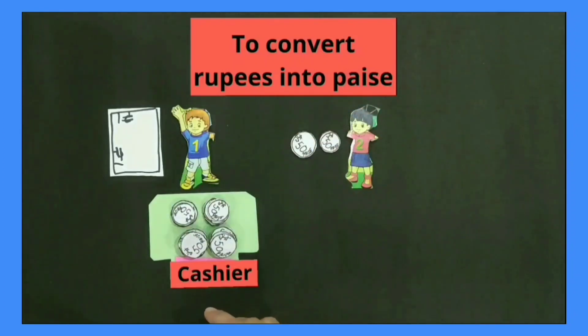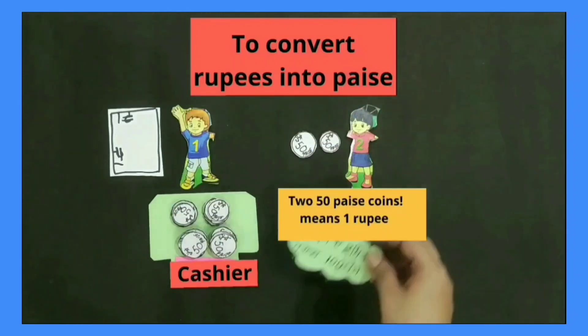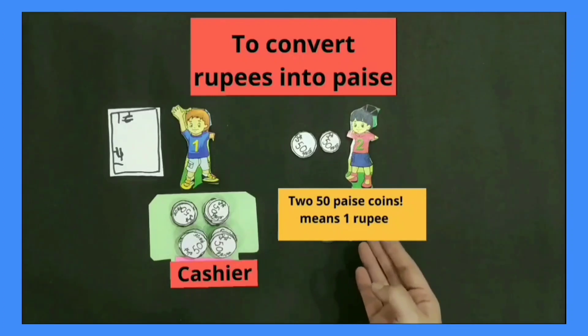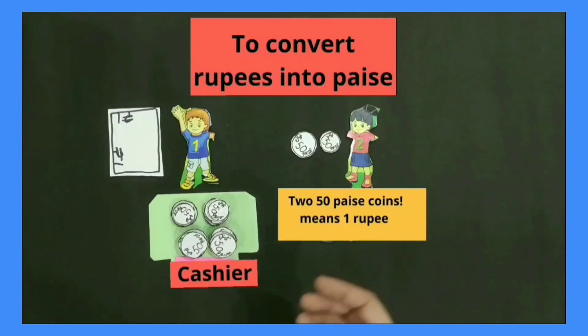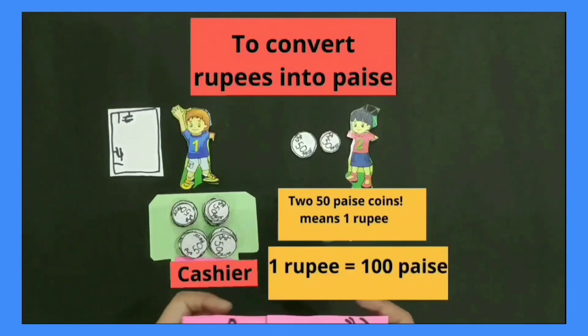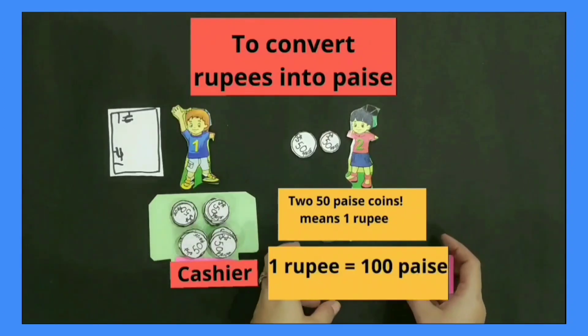Two 50 paise coins means 1 rupee. It means 1 rupee is equal to 100 paise.